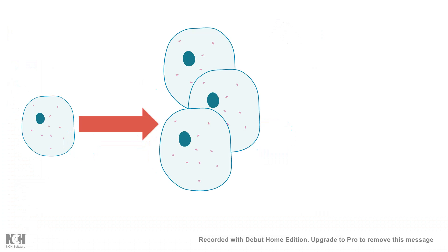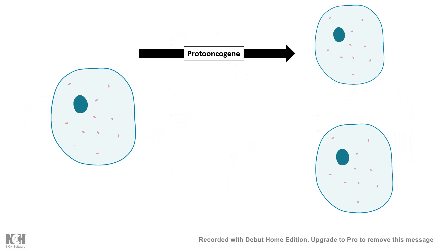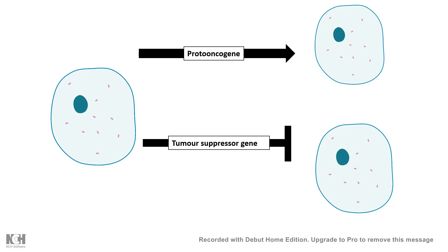In order to support the growth of an organism, cells need to grow and divide, but after a point of time cells also need to die. So there are two categories of genes: one which promotes cell division, proliferation, and growth, known as proto-oncogenes, and the other category is tumor suppressor genes, which prevent the excessive growth of cells or a tissue.